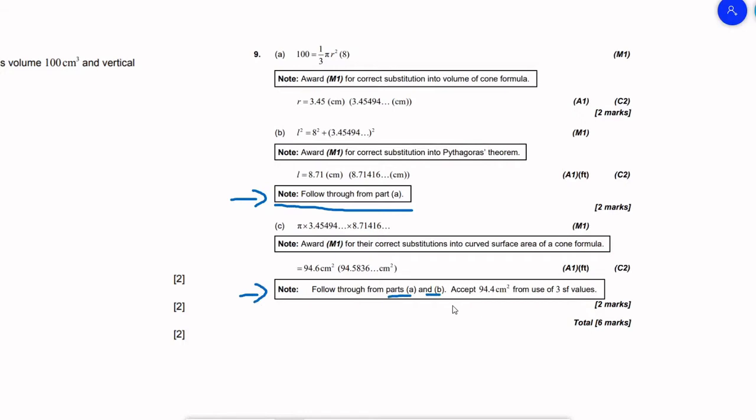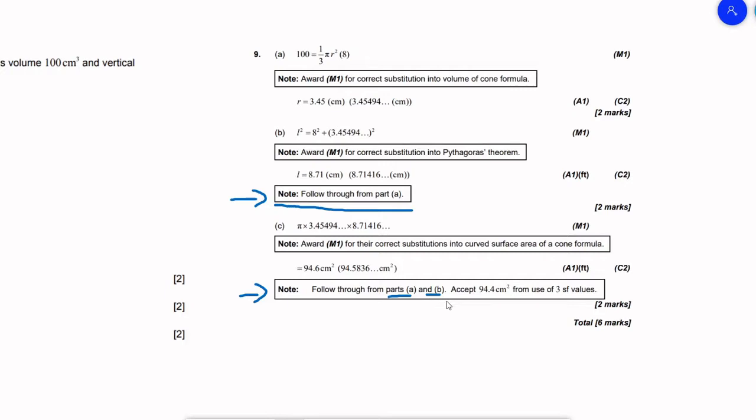This goes to show that you can have your entire test with the wrong answer but with the right process, and you will probably get a 4, and I would be willing to bet maybe a 5 on the IB exam. This is because process is very important for the IB.